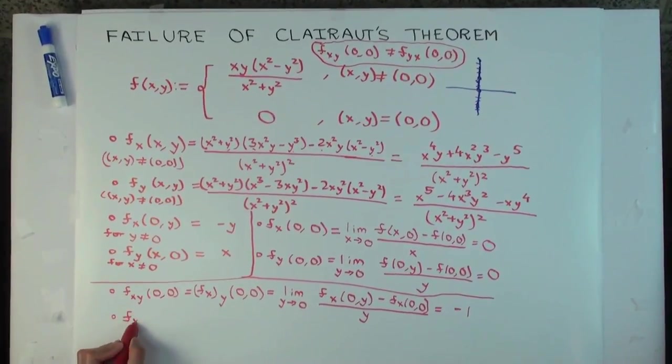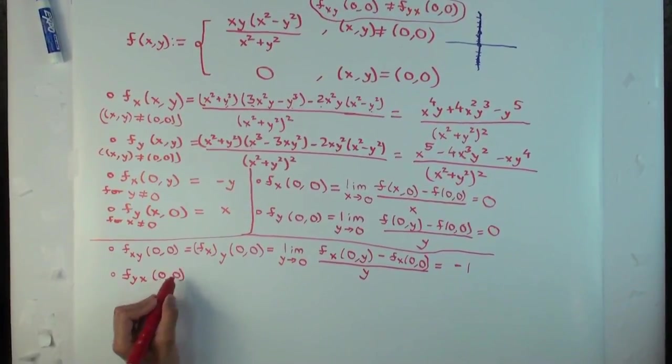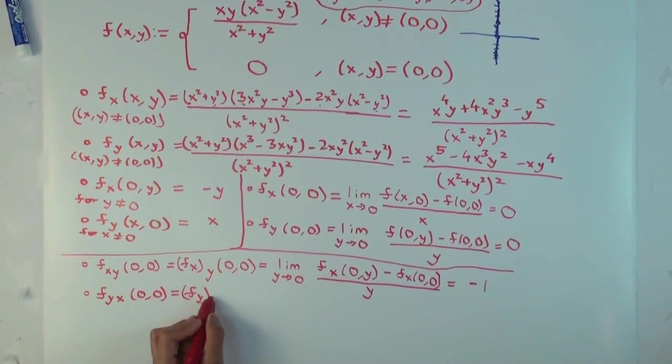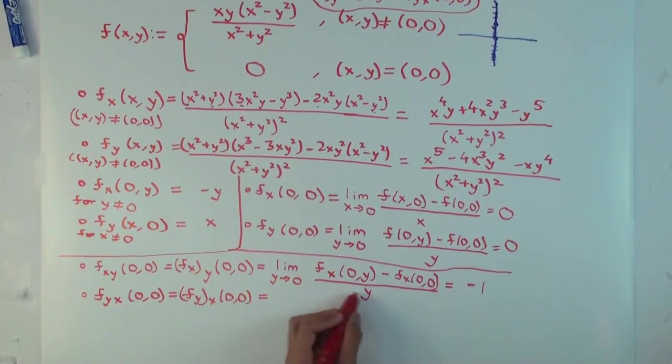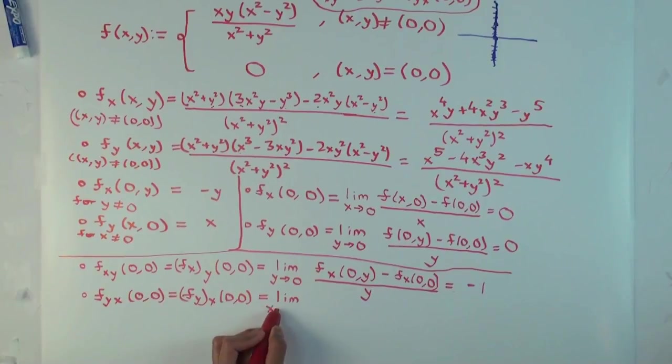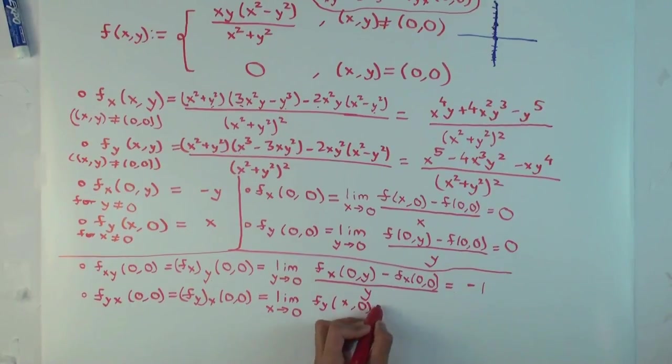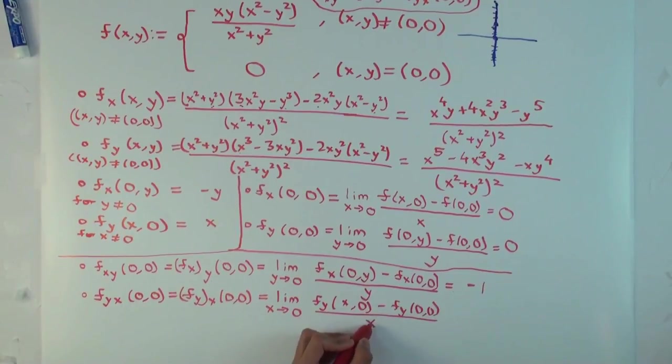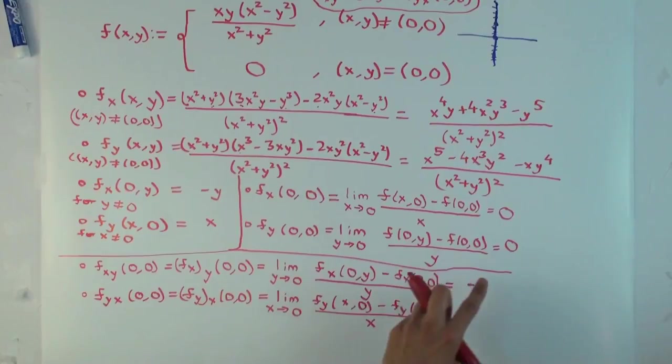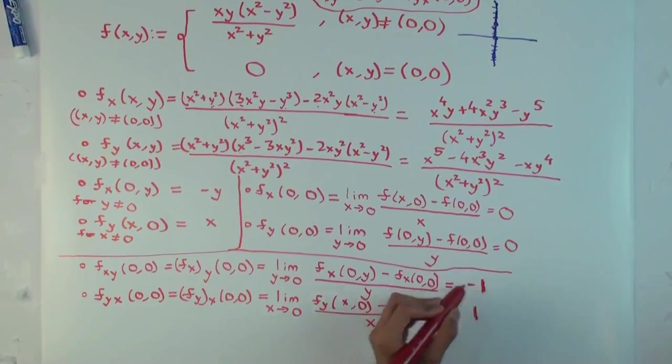Because I am skipping a few steps, but it's basically just plug in here and here and get this. Okay, what is f sub yx of (0,0)? So, what limit will this be? What limit expression will this be? f sub y of (x,0) minus f sub y of (0,0), over x. Right? And that's x minus 0, over x. So, that's 1. So, are we done? Did we prove what we wanted to prove?